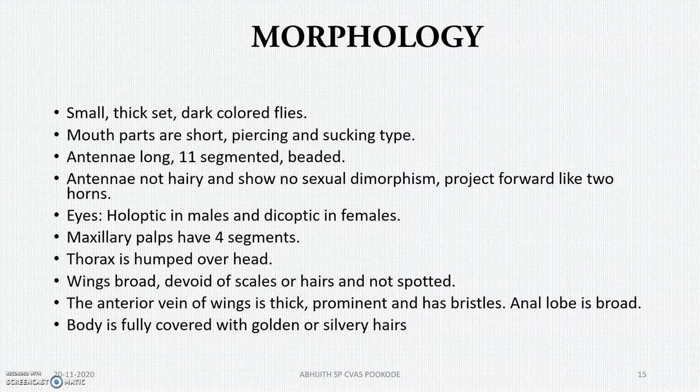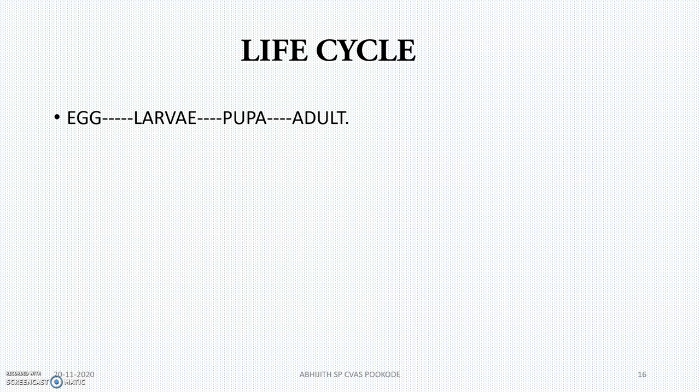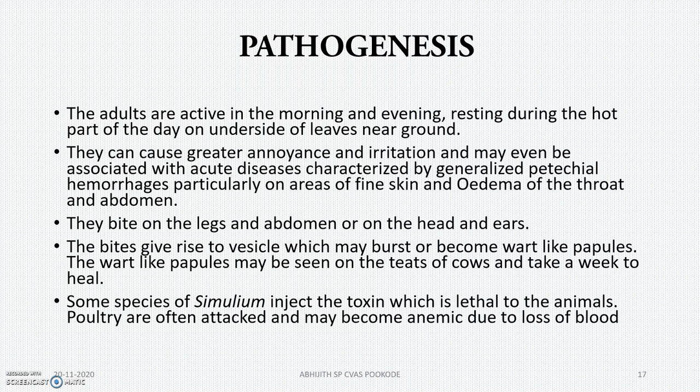The life cycle is the same as other flies: egg to larva, larva to pupa, and pupa to adult. Moving to the pathogenesis: they are powerful biters, producing hypersensitivity reactions, edema, small rash-like symptoms, which may become wheals and papules. Sometimes they inject a toxin which is lethal to large and small animals, and this can kill the animal.